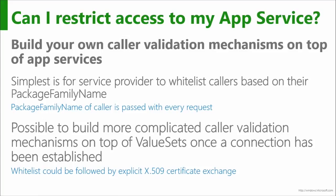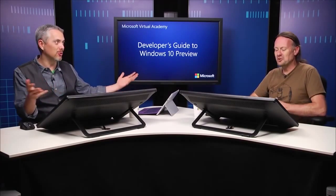One thing you do get for free is the package family name of the caller is automatically passed in the args on every message to the service. So you can't anonymously call the service. The simplest mechanism — particularly for an enterprise — would be to whitelist all the callers: check if this caller is in my list, and if so, process the request. That's nice and simple. If it's a generic application providing a service to anybody who wants to call, creating a whitelist could be very difficult and not practical — they might have to build other mechanisms.